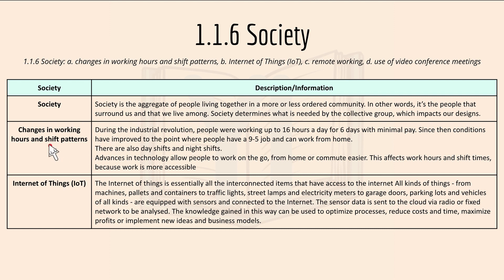For changes in working hours and shift patterns: during the industrial revolution, people were working up to 16 hours a day for six days with minimal pay. Since then, conditions have improved to the point where people have 9-to-5 jobs and can work from home. There are also day shifts and night shifts, and advances in technology allow people to work on the go from home more easily, making work more accessible.